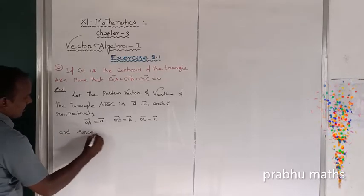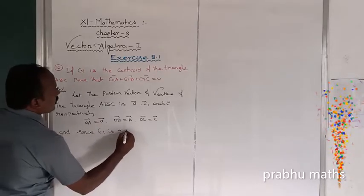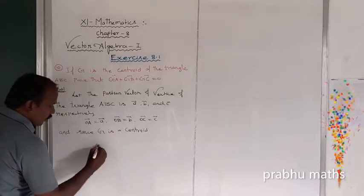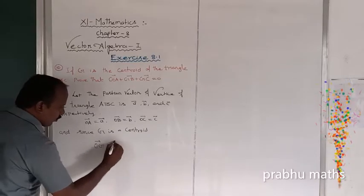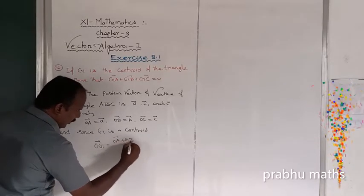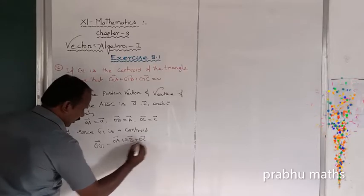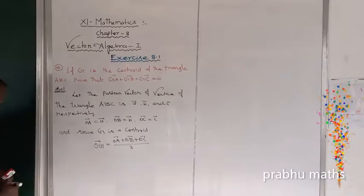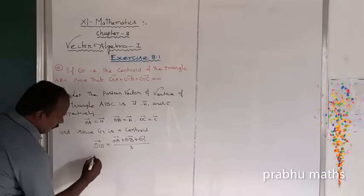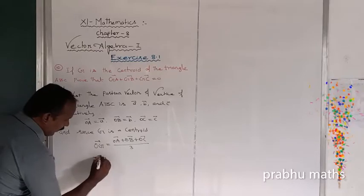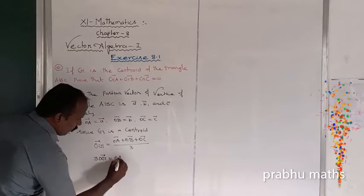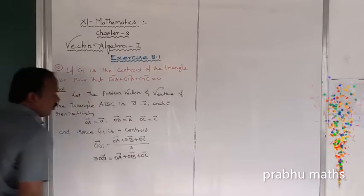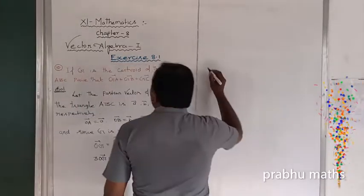Since G is a centroid, we know that OG vector is equal to OA vector plus OB vector plus OC vector, whole divided by 3. So we get: 3 times OG vector is equal to OA vector plus OB vector plus OC vector.